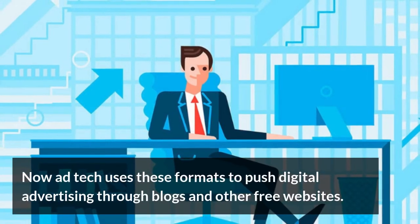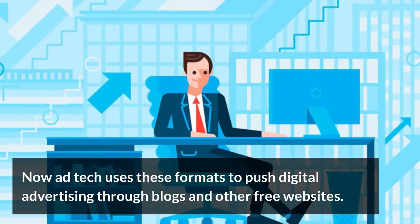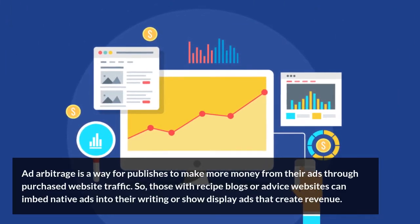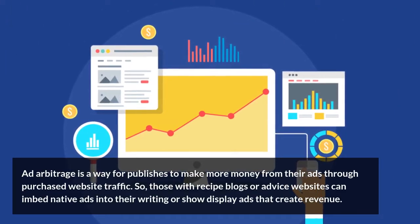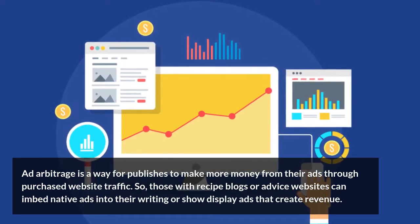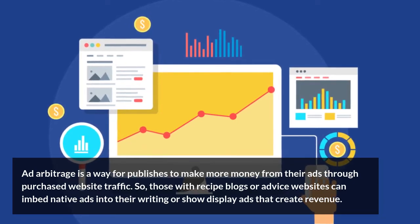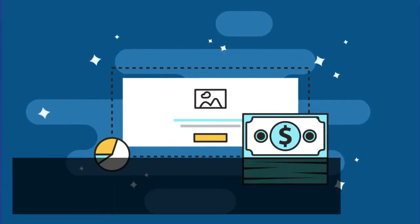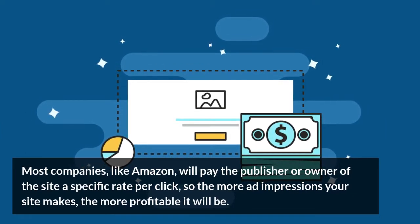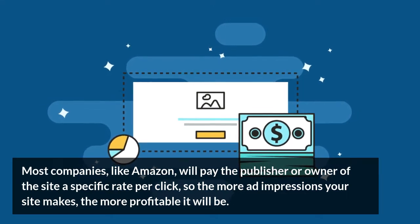AdTech uses these formats to push digital advertising through blogs and other free websites. Ad Arbitrage is a way for publishers to make more money from their ads through purchased website traffic. Those with recipe blogs or advice websites can embed native ads into their writing or show display ads that create revenue. Most companies, like Amazon, will pay the publisher or owner of the site a specific rate per click.